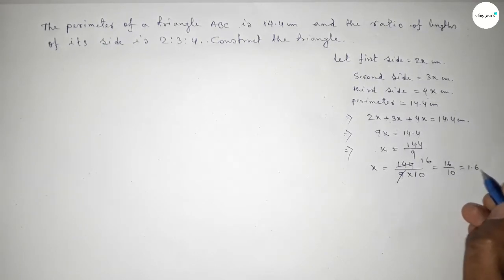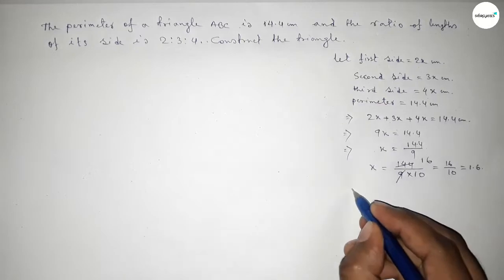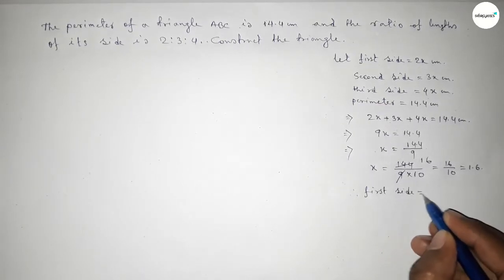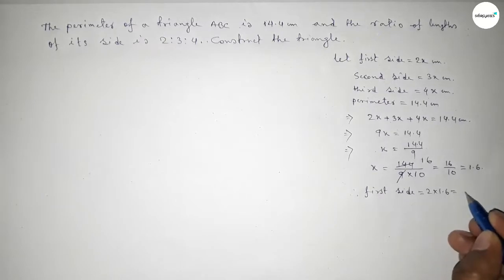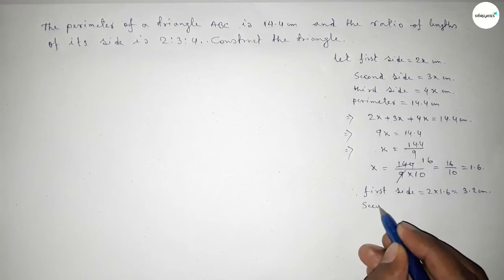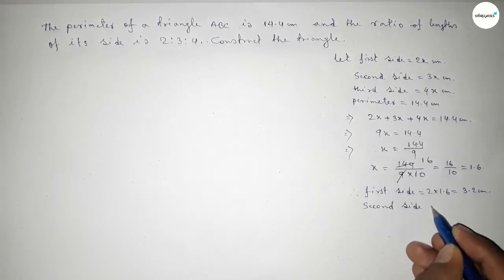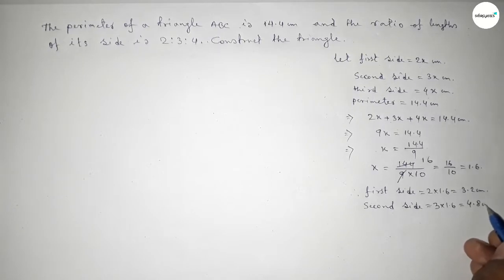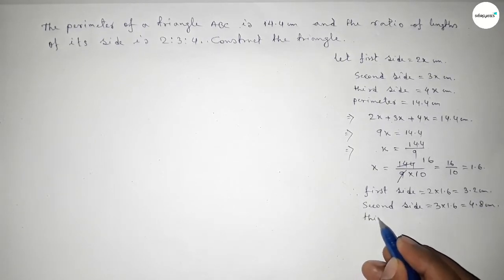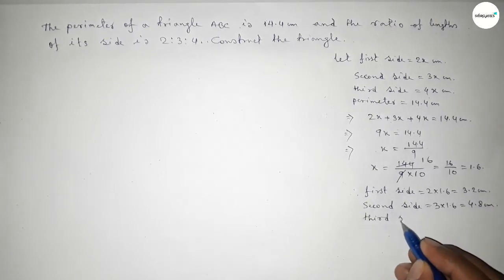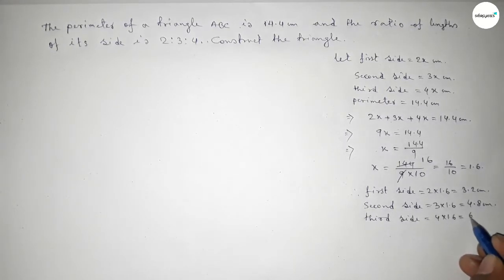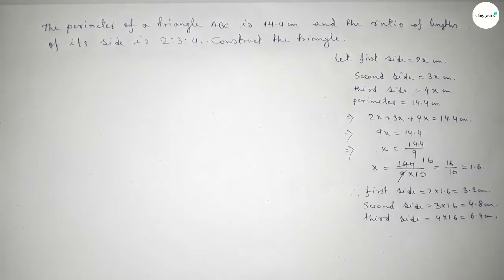So x = 1.6. The length of the first side equals 2 × 1.6 = 3.2 centimeters. The length of the second side equals 3 × 1.6 = 4.8 centimeters. And the length of the third side equals 4 × 1.6 = 6.4 centimeters. These are the three sides of the triangle.